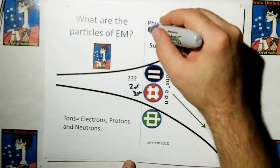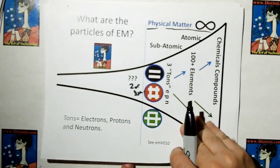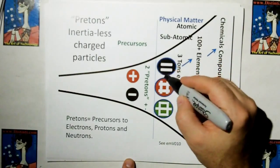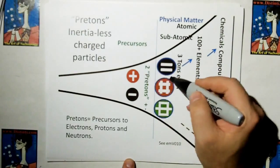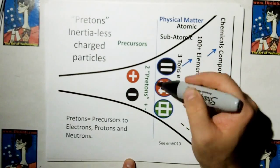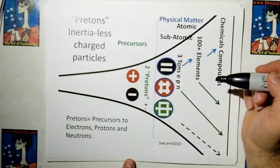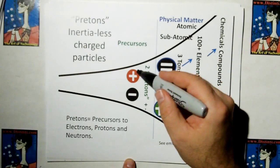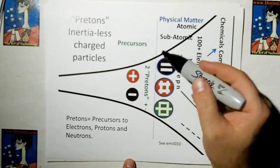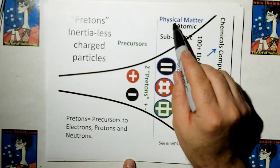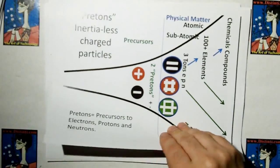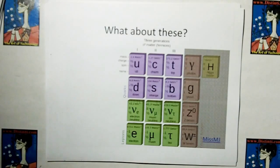And in this part here, I'm calling this section physical matter. In ethereal mechanics, I'm going to show you that all this matter, and the blue ring here means this has inertia, can all be synthesized by precursor elements, which are two inertialist charged particles. And I'm calling them pretons for short. We have a positive preton and a negative preton. Preton pretty much stands for the precursor to electrons, protons, and neutrons, or the precursor to physical matter. They're essentially just inertialist charged particles. All tons can be synthesized by pretons, but what about these things?